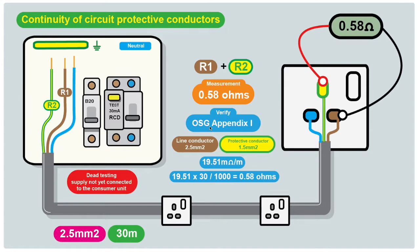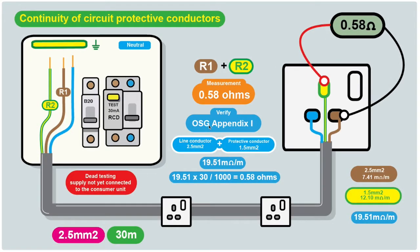We turn to Appendix I, Table I1, and there's a whole list of different conductor sizes. This list gives the cross-sectional area of both the line conductor and the protective conductor. We've used 2.5 millimeter squared twin in earth cable, and the 2.5 millimeter squared is the line conductor which has a resistance of 7.41 milliohms per meter.